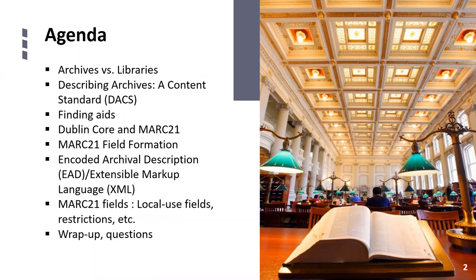Our agenda is as follows: we'll start by looking at the differences between archives and libraries, then move into a brief overview of Describing Archives, a content standard commonly referred to as DAX. We'll look at finding aids, Dublin Core, and how finding aids apply to Dublin Core and translate into MARC 21. We'll review a crosswalk map, briefly peek at EAD and XML, review MARC 21 fields less common when cataloging books but more common in archival records, and look at local notes fields regarding restrictions or special characteristics. Then I'll wrap up and take questions.